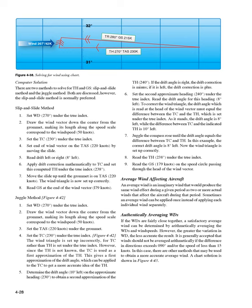Average wind: an average wind is an imaginary wind that would produce the same wind effect during a given period as two or more actual winds affecting the aircraft during that period. Sometimes an average wind can be applied once instead of applying each individual wind separately. If the WDs are fairly close together, a satisfactory average wind can be determined by arithmetically averaging the WDs and wind speeds. However, winds should not be averaged arithmetically if the difference in directions exceeds 090° or the speed is less than 15 knots. A chart solution is shown in Figure 4-43.